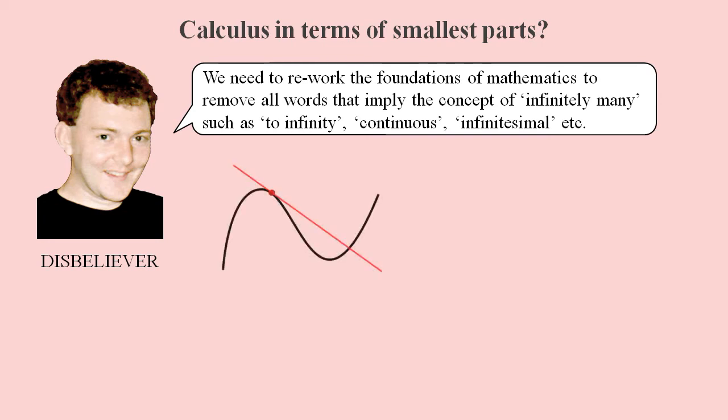In differential calculus we calculate a slope by supposedly narrowing down to an infinitely small point on an infinitely thin line. How can anyone not see how absurd this is? In integral calculus the area under a supposedly infinitely thin line is thought of as consisting of infinitely many rectangles that are all infinitely thin.